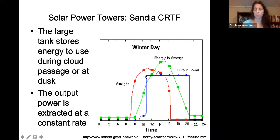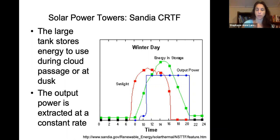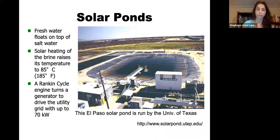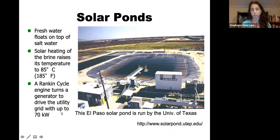The heated salt is then used to generate electricity through conventional means. A solar pond uses fresh water floating on top of salt water — solar heating of the brine raises its temperature and a Rankine cycle engine turns a generator. This produces around 70 kilowatts, so it is suited for small applications rather than utility-scale power generation.